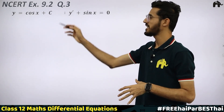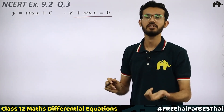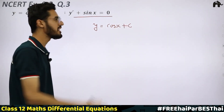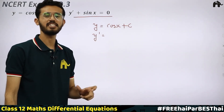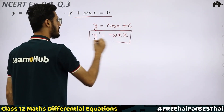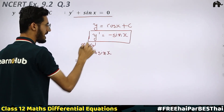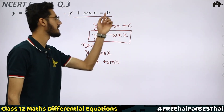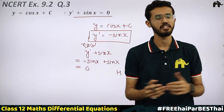Question 3: y = cos x + c, differential equation: y′ + sin x = 0. Find y′: derivative of cos x is −sin x, derivative of c is 0, so y′ = −sin x. Substituting: y′ + sin x = −sin x + sin x = 0. Verified — this function is a solution of the differential equation.